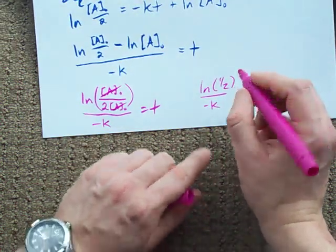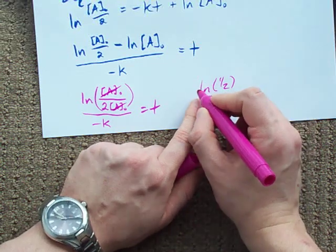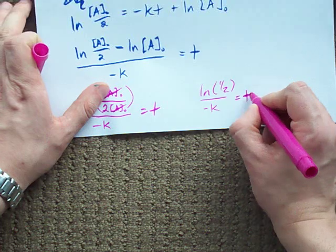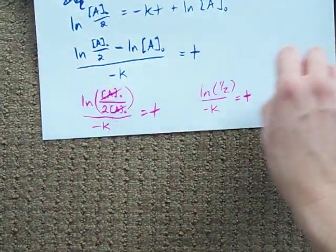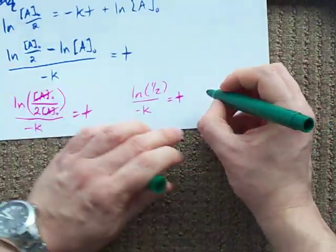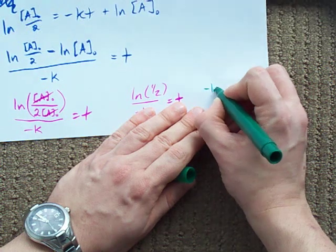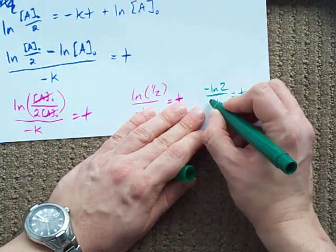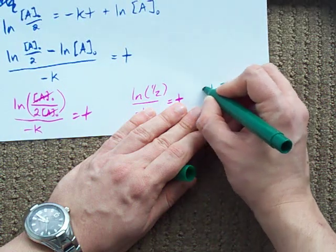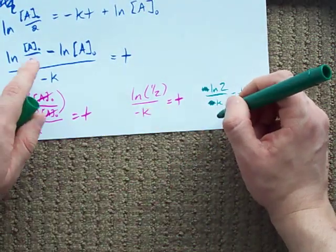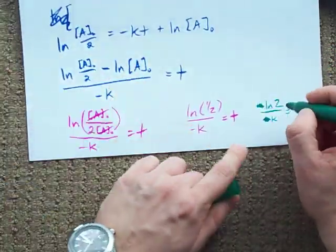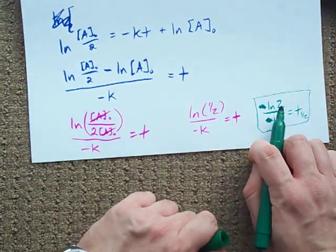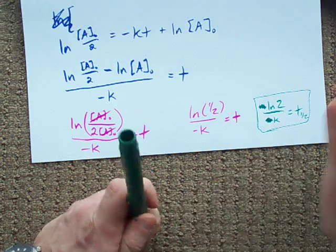And the other thing that you'll notice is that I can actually turn this into a negative ln if I flip this fraction. That's one of the ln rules, or laws of logarithms, I should call it. Which means I have negative ln 2 over negative k. These negatives cancel out. And all of a sudden, this monstrosity is simplified to the half-life of a first-order reaction is ln 2 divided by k.